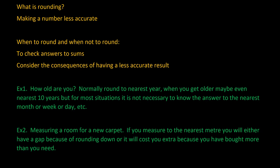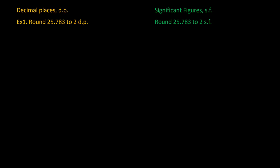In the second example, we're measuring a room to get a new carpet. If you were to measure the room and then round everything to the nearest meter, the consequences are that you'll either end up with a gap because you've rounded down, or it's going to cost you extra because you've rounded up and bought more than you need. So that's how you can decide whether you're rounding too far or too much.